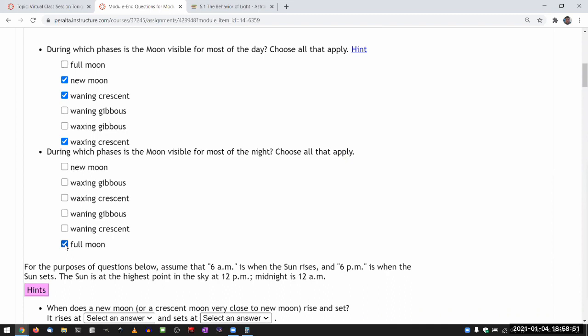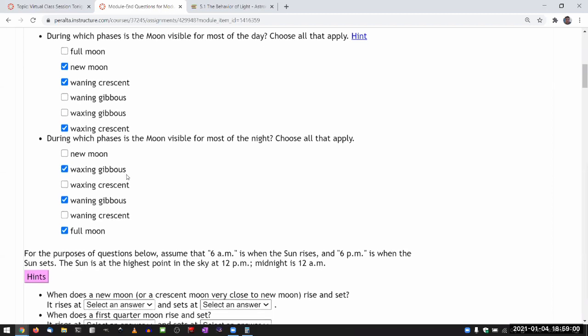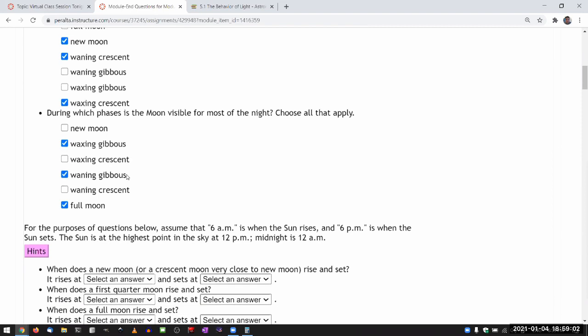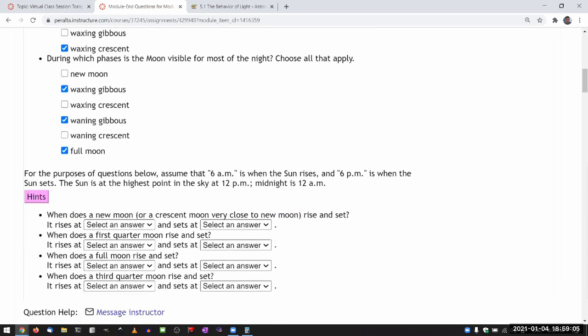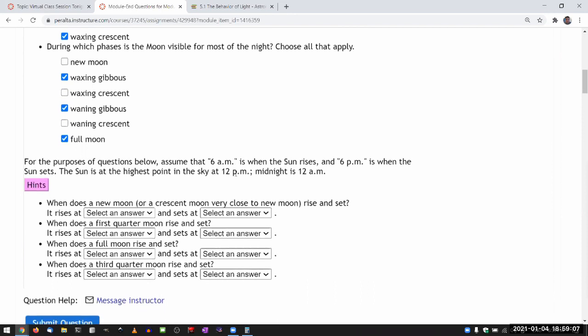It'll be the full moon that's visible for all of the night and the gibbous moons that's visible most of the night. So for the purpose of the question below, assume that at 6 a.m., okay.